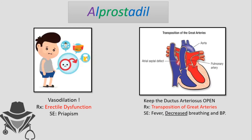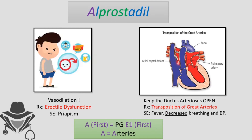The mnemonic for alprostadil: 'A' is the first letter of the alphabet, so it goes with the first prostaglandin E1. 'A' also stands for 'arteries,' reminding us it can cause vasodilation treating erectile dysfunction, and 'arteries' also reminds us of the ductus arteriosus. So: alprostadil — A, first letter, prostaglandin E1, A for arteries.